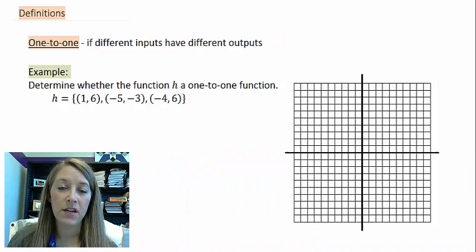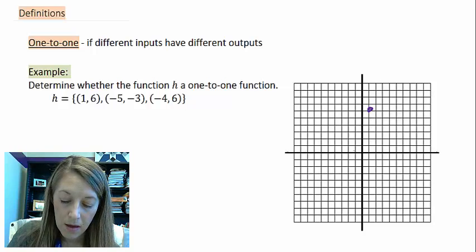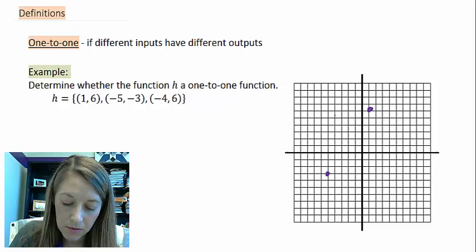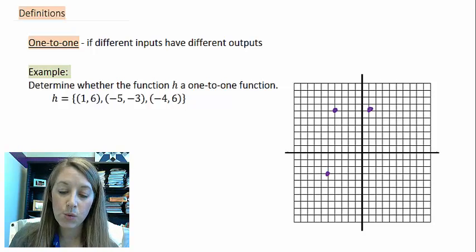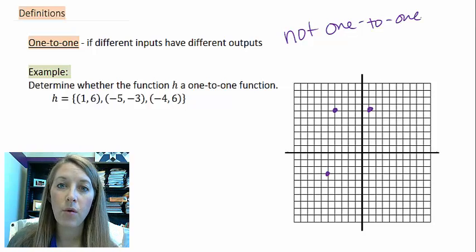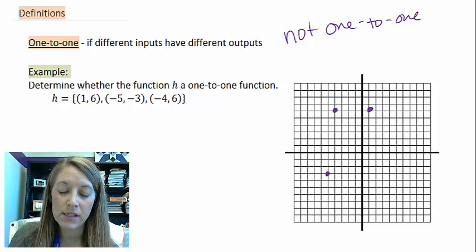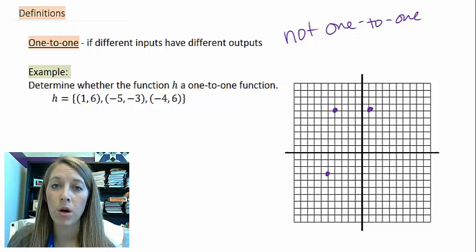Just like the last definition, let's see what's actually happening on the graph. Let's go ahead and graph these points: 1, 6; negative 5, negative 3; and negative 4, 6. We know this was not one-to-one because we had duplicate outputs. Now we need to see how that transforms into this graph — what's causing us problems? You might not notice it right now, so let's do a bit more work first and then there should be an aha moment.